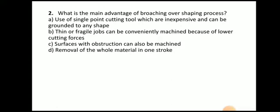Next question: what is the main advantage of broaching over the shaping process? The answer is removal of whole material in one stroke. In shaping, a single point cutting tool reciprocates over the workpiece, removing very little material per stroke. In broaching, we remove the entire material in one stroke.